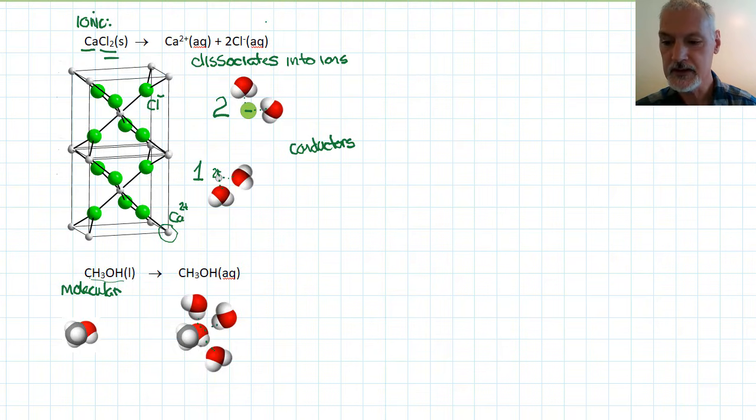But the substance remains intact - it doesn't dissociate. And since it doesn't dissociate, there are no ions, and if there's no ions, it is a very poor conductor.